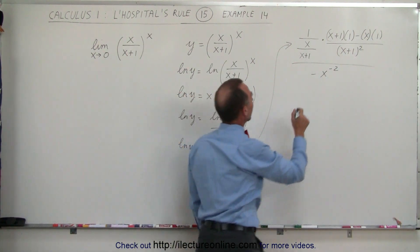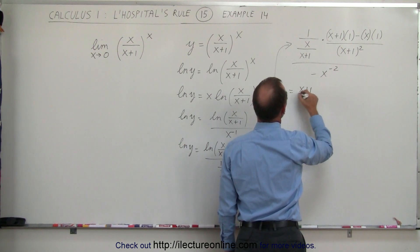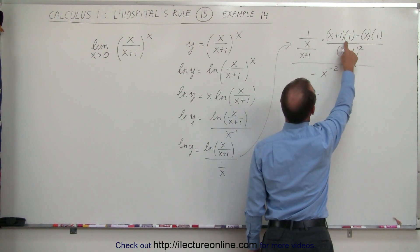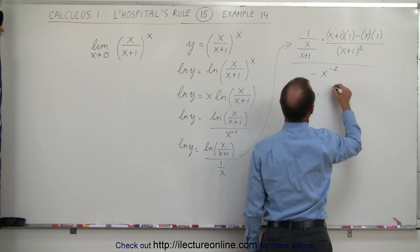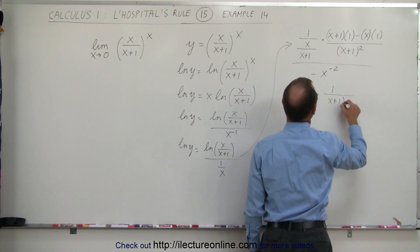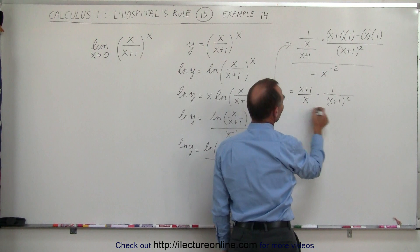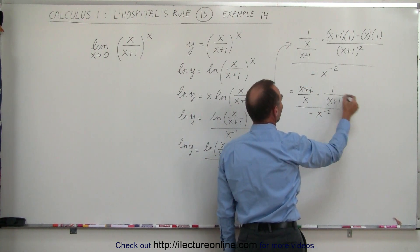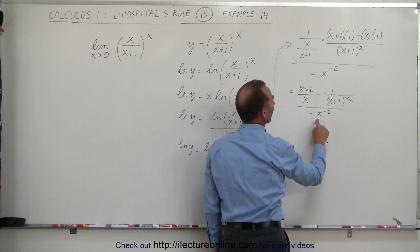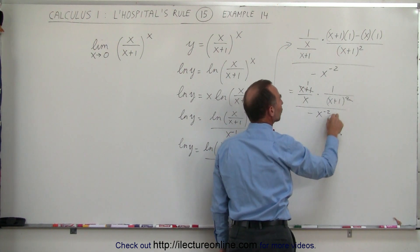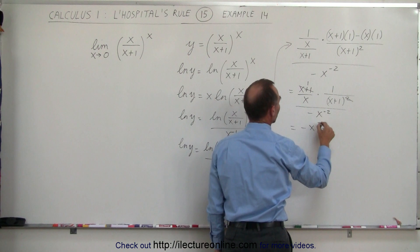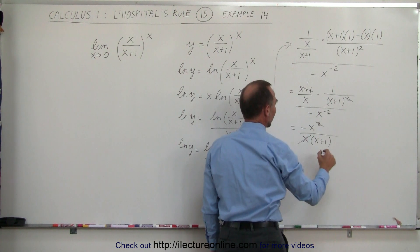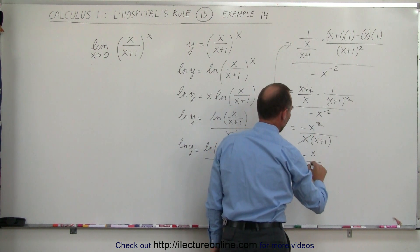If we simplify that, this is equal to x plus 1 over x — bringing that to the numerator — times x plus 1 minus x, so the x's cancel, leaving 1 in the numerator and (x plus 1) squared in the denominator, all divided by negative x to the minus 2. One factor of (x plus 1) cancels, the negative x to the minus 2 moves to the numerator as x squared — giving us negative x squared divided by x times (x plus 1). The x cancels, and finally this equals negative x over x plus 1.